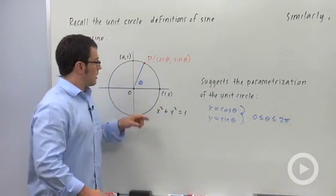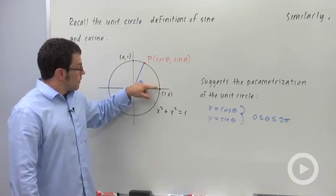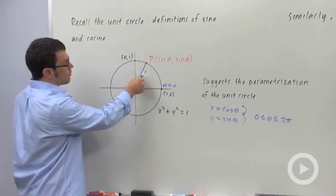Now, let's see what kind of parametrization that gives us. When theta equals 0, remember that we're going to be right here. When theta equals π, we'll be up here.